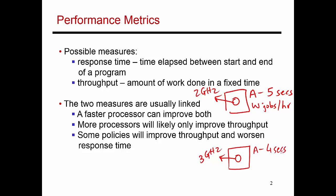So its response time has now improved. And because this processor is faster, in a given hour, it can finish more than just W jobs. It can finish 1.5 W jobs per hour. So by just making my processor faster, I can improve both response times as well as throughput.